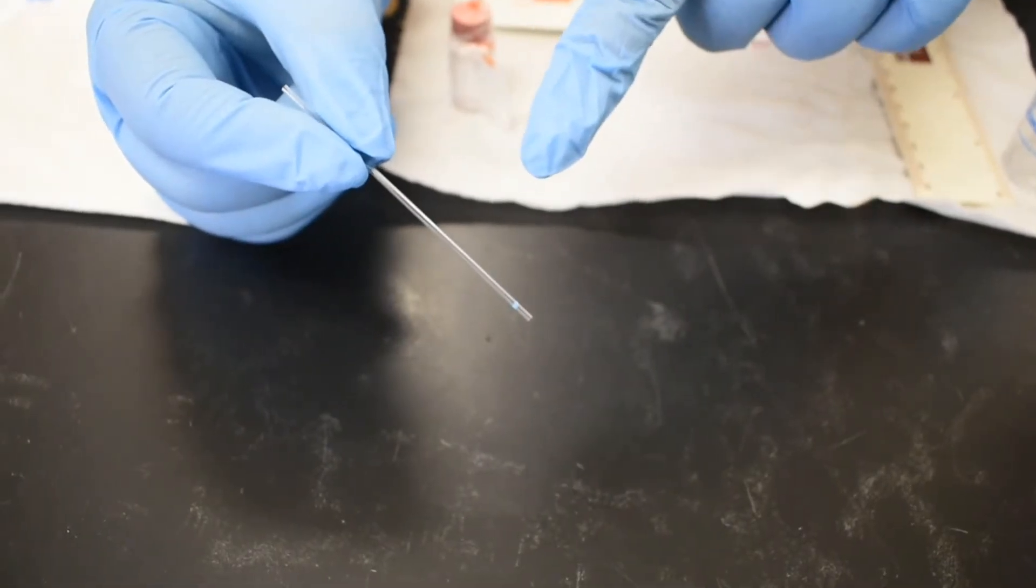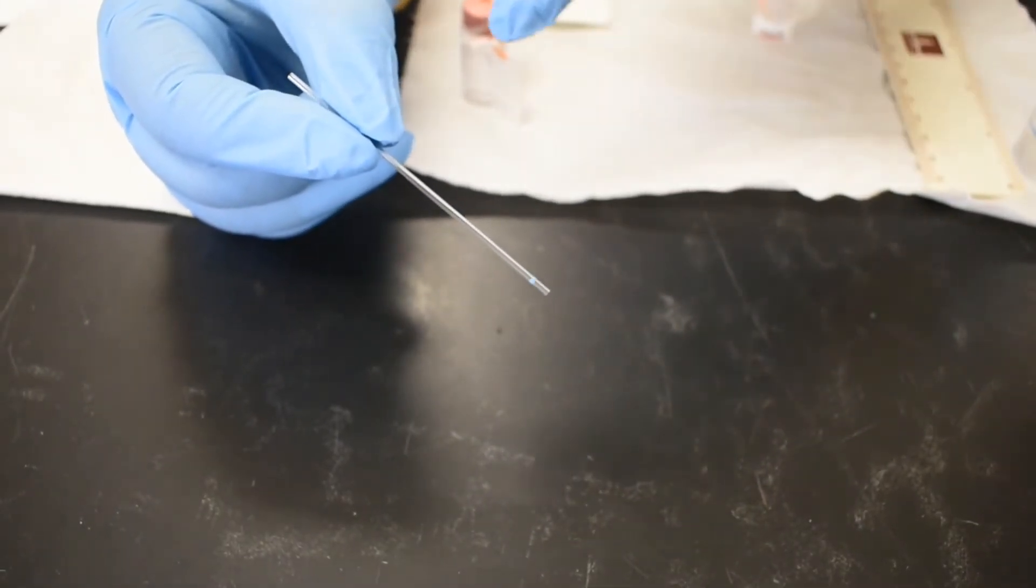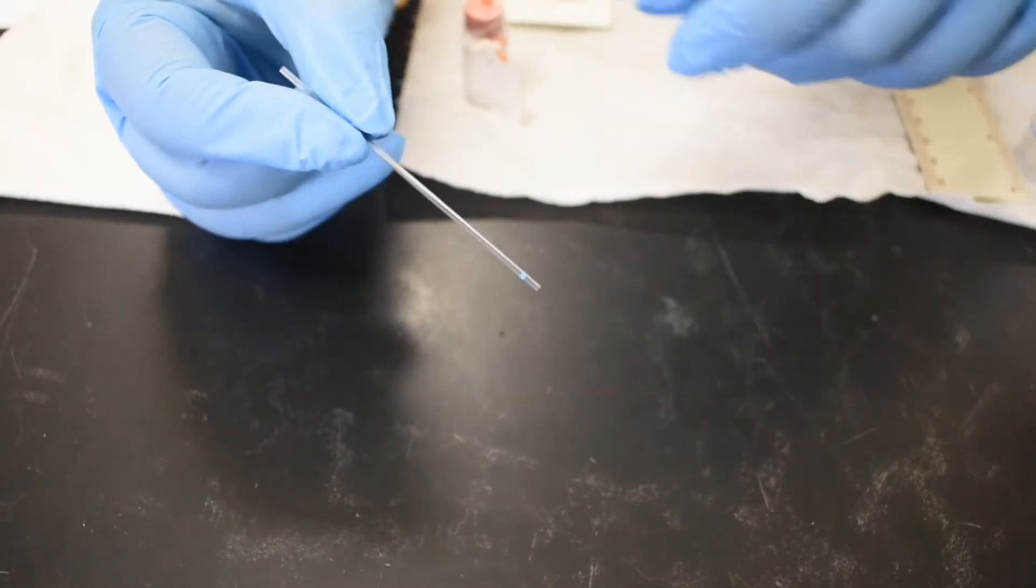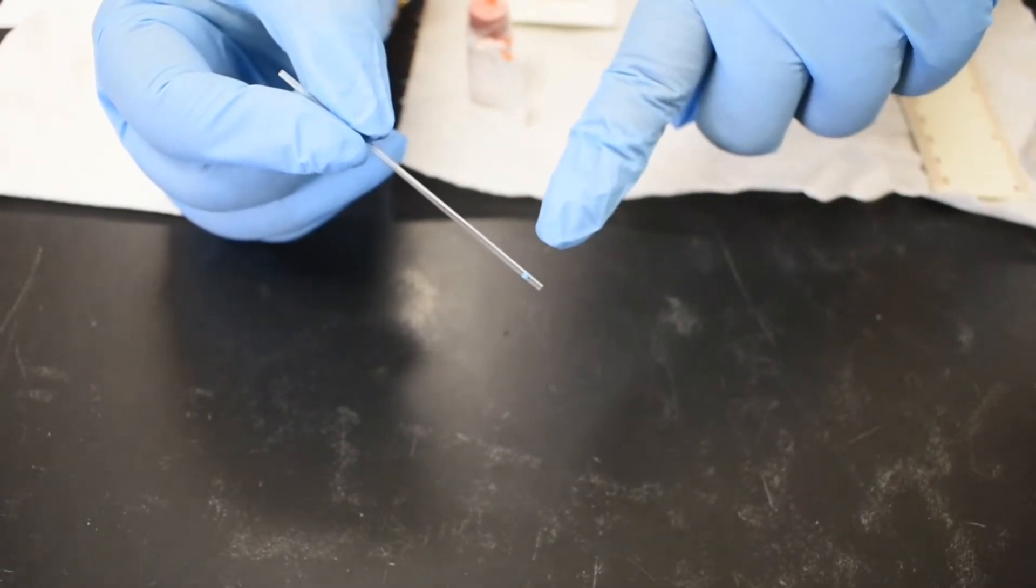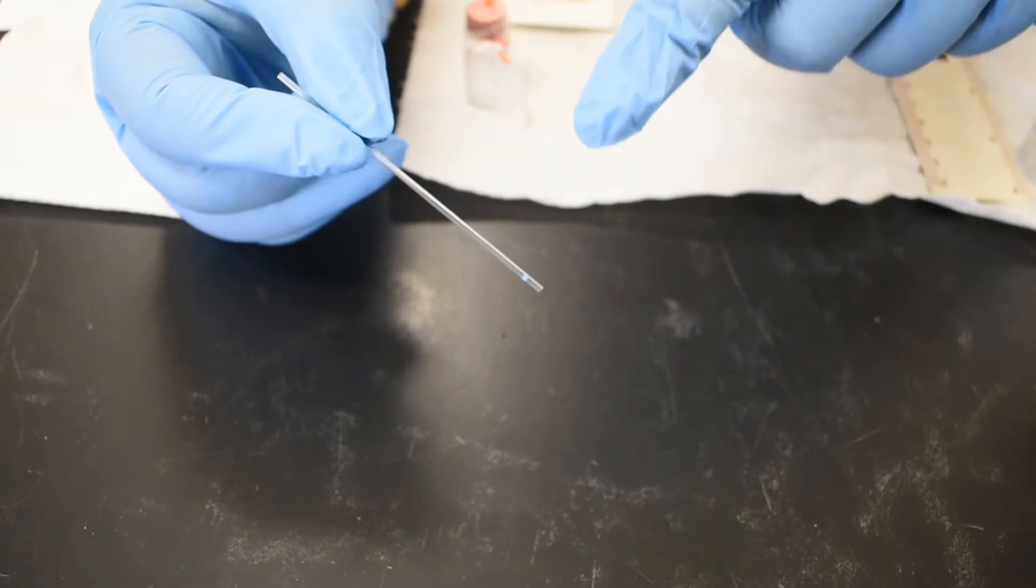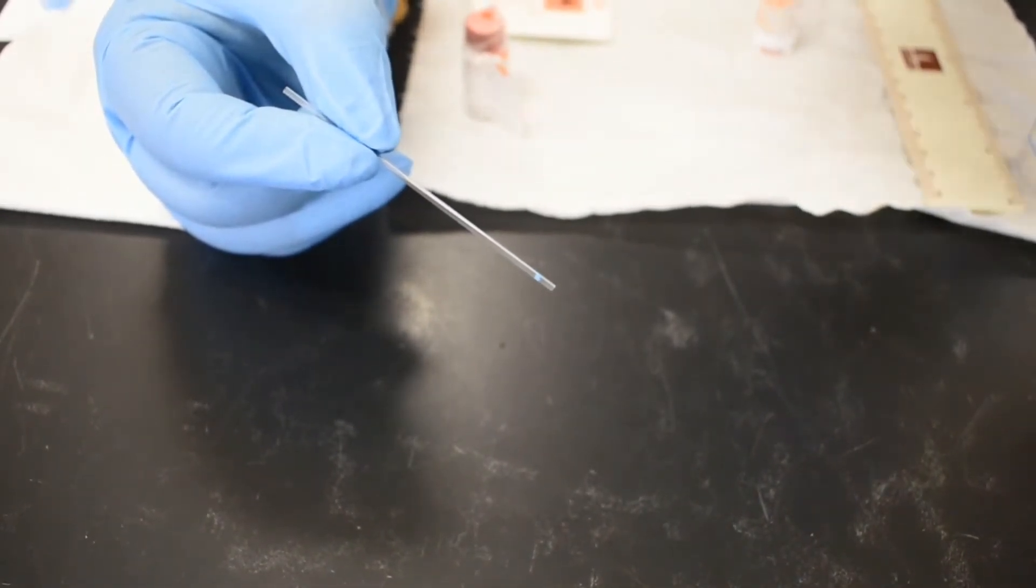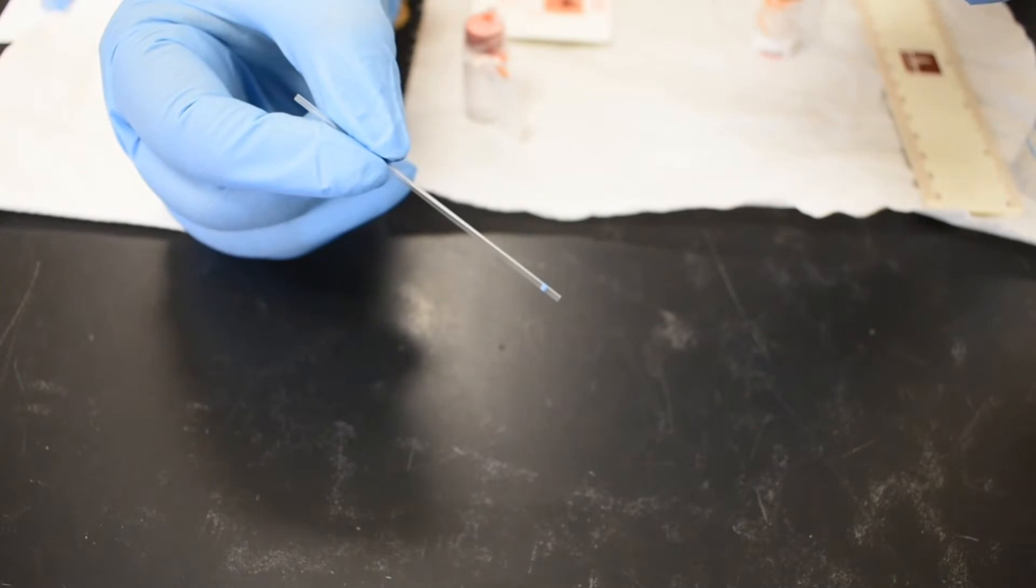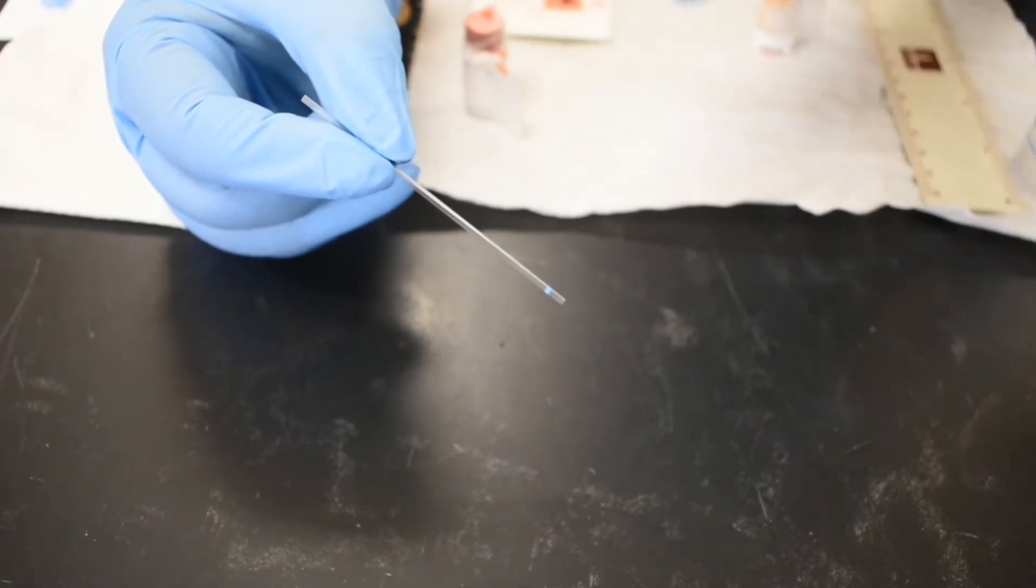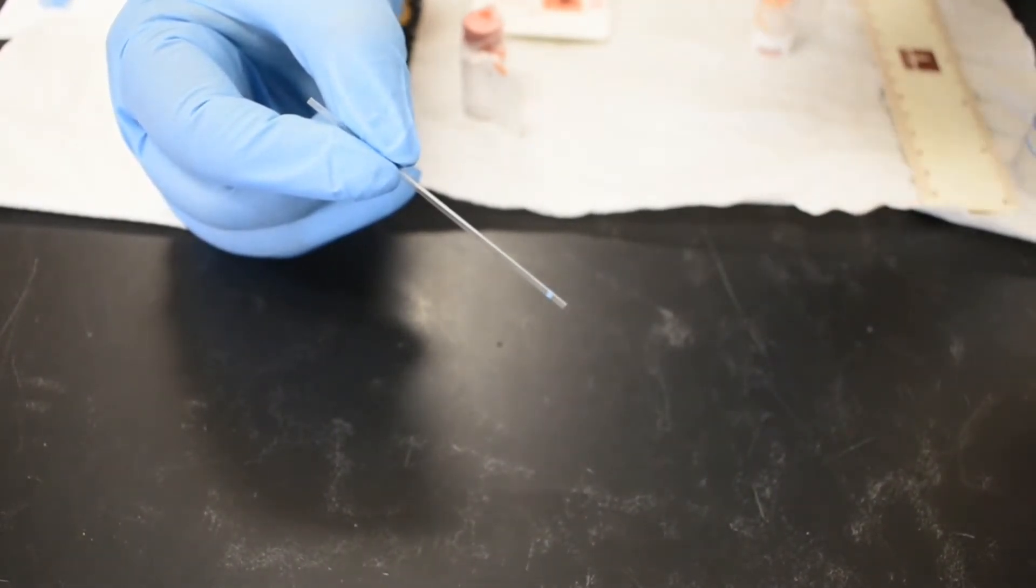Here is the micro capillary tube. We will draw blood into it. If you look carefully, on one end of the capillary tube there is a blue ring. Make sure you dip that end into the sample to draw the blood, and I will explain to you later why I am suggesting to do that.